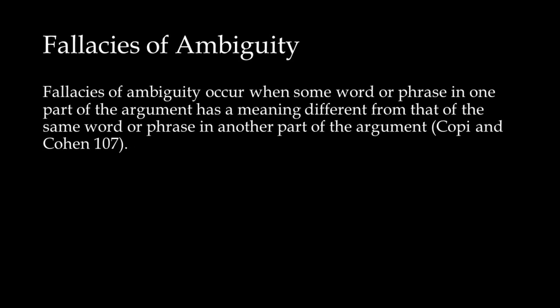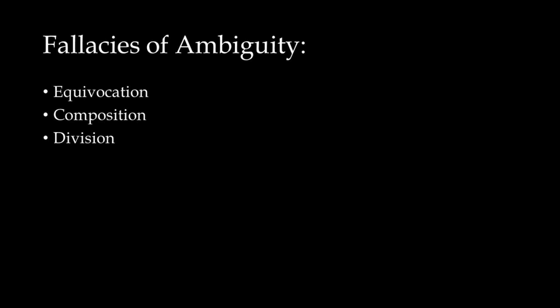Fallacies of Ambiguity occur when some word or phrase in one part of the argument has a meaning different from that of the same word or phrase in another part of the argument. In this video, I will explain three different fallacies of ambiguity: the fallacy of equivocation, the fallacy of composition, and the fallacy of division.